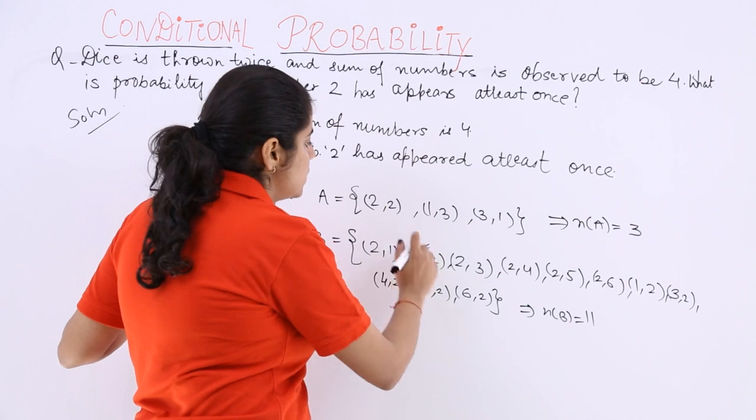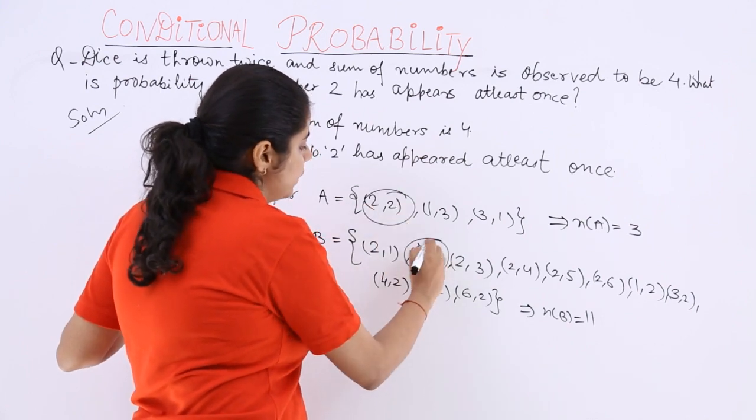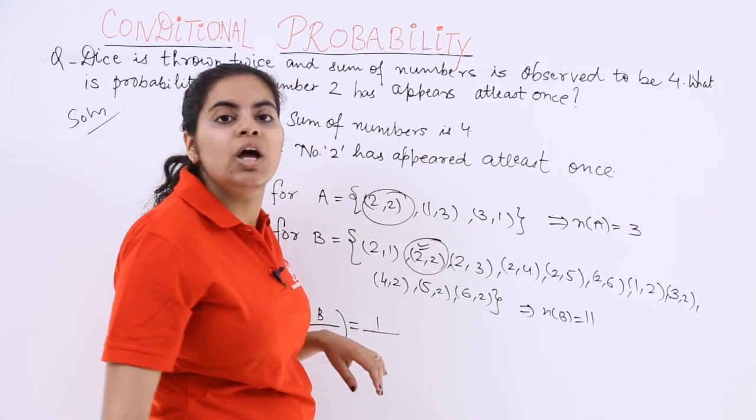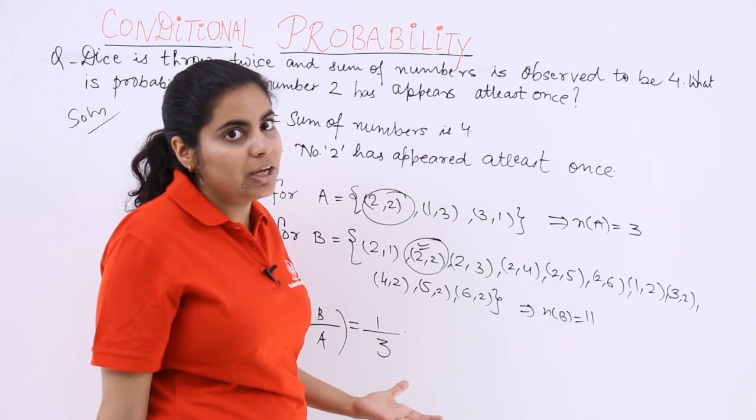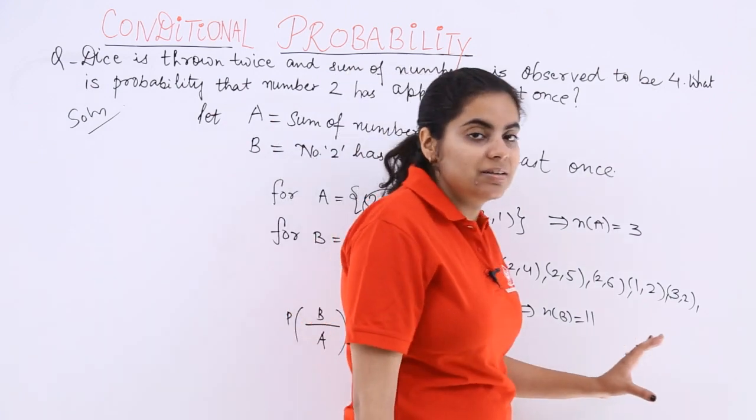Which means intersection will be upwards. Now intersection, if you see that only this is common. So intersection is 1 over A should be downwards. How many are there under A? 3. So 1 over 3 should be the answer.